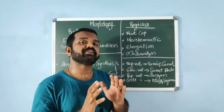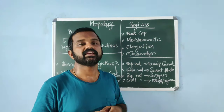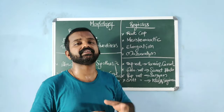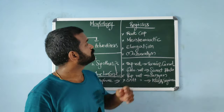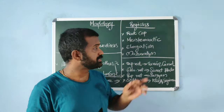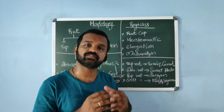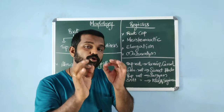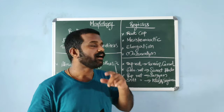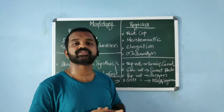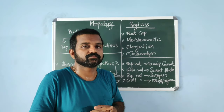Regions of a typical root, starting from the tip: the root cap is a thimble-like protective structure at the apex. A few millimeters above the root cap is the meristematic region, which consists of actively dividing cells that are thin-walled with dense protoplasm. Cells proximal to this region are in the elongation zone, responsible for growth in length.